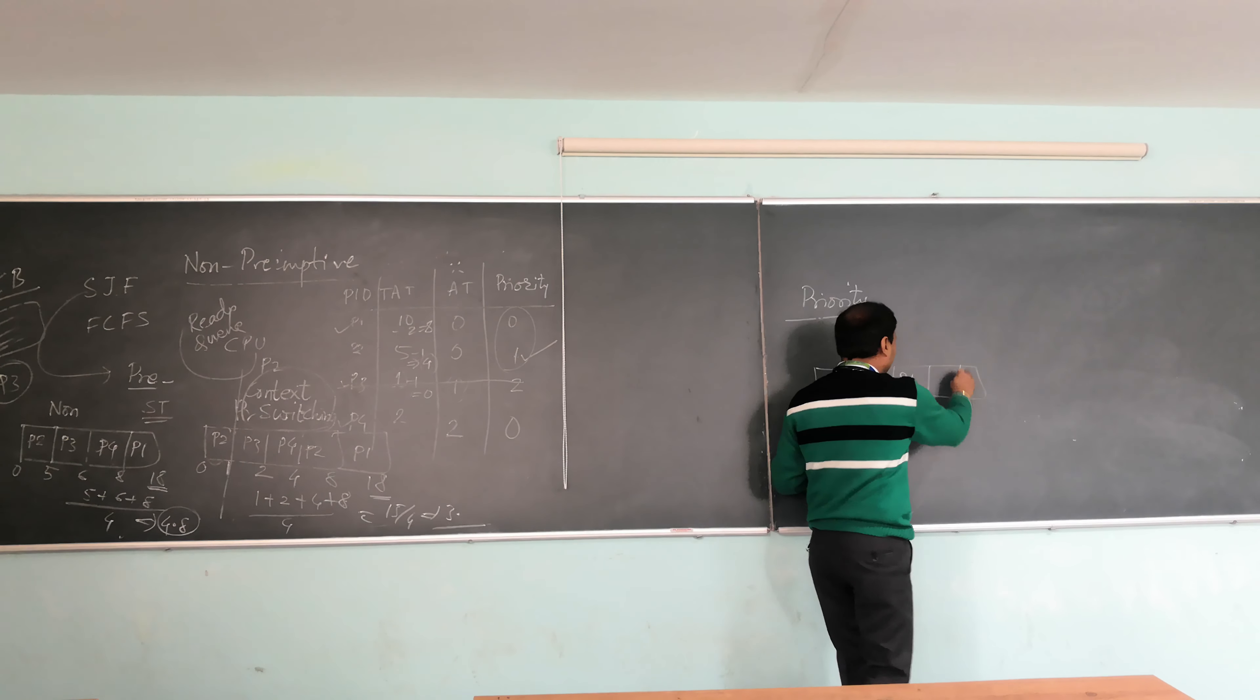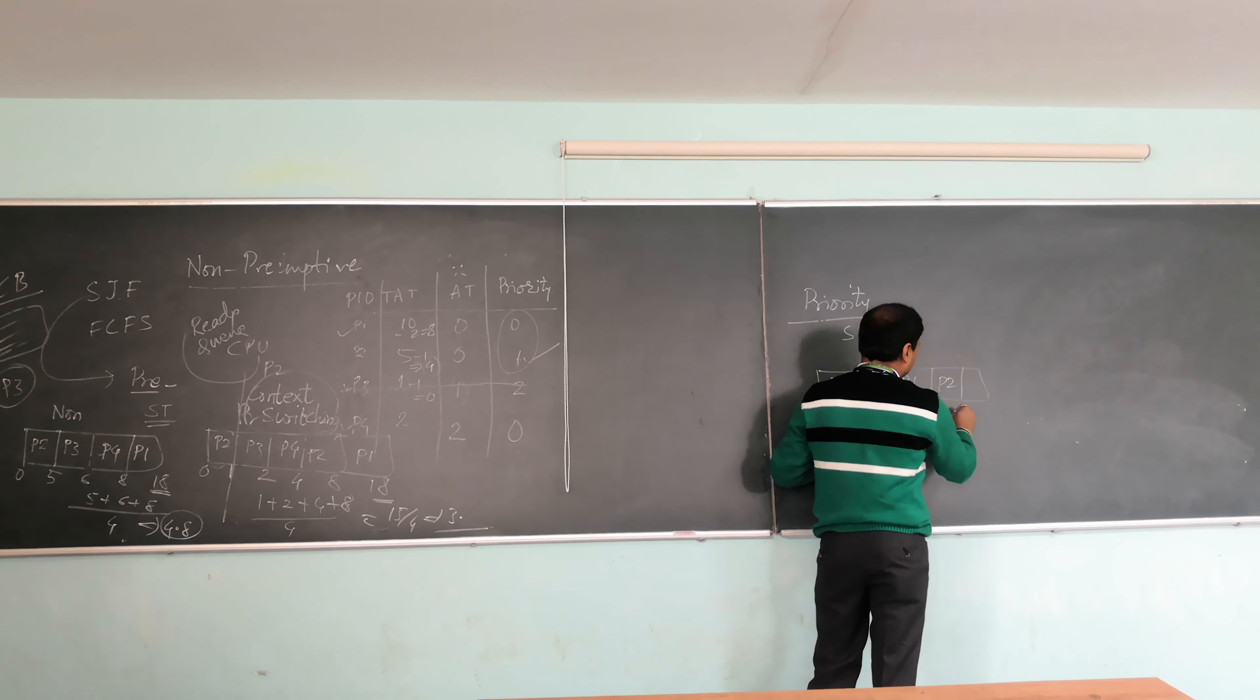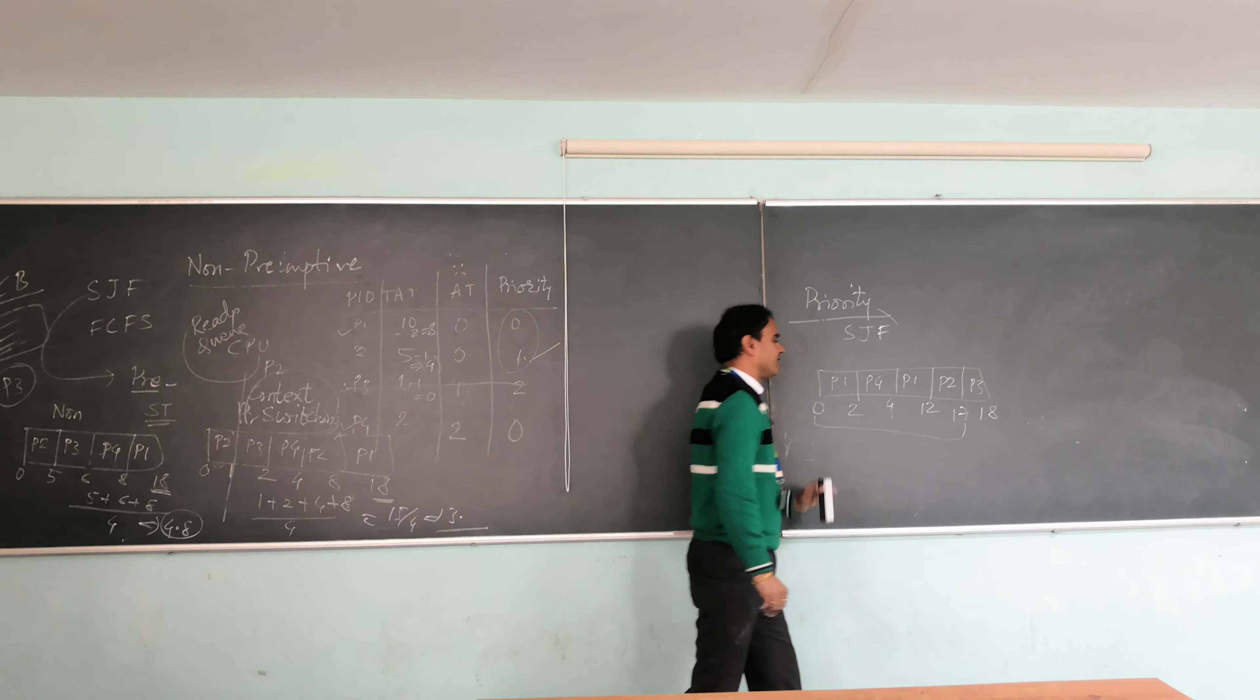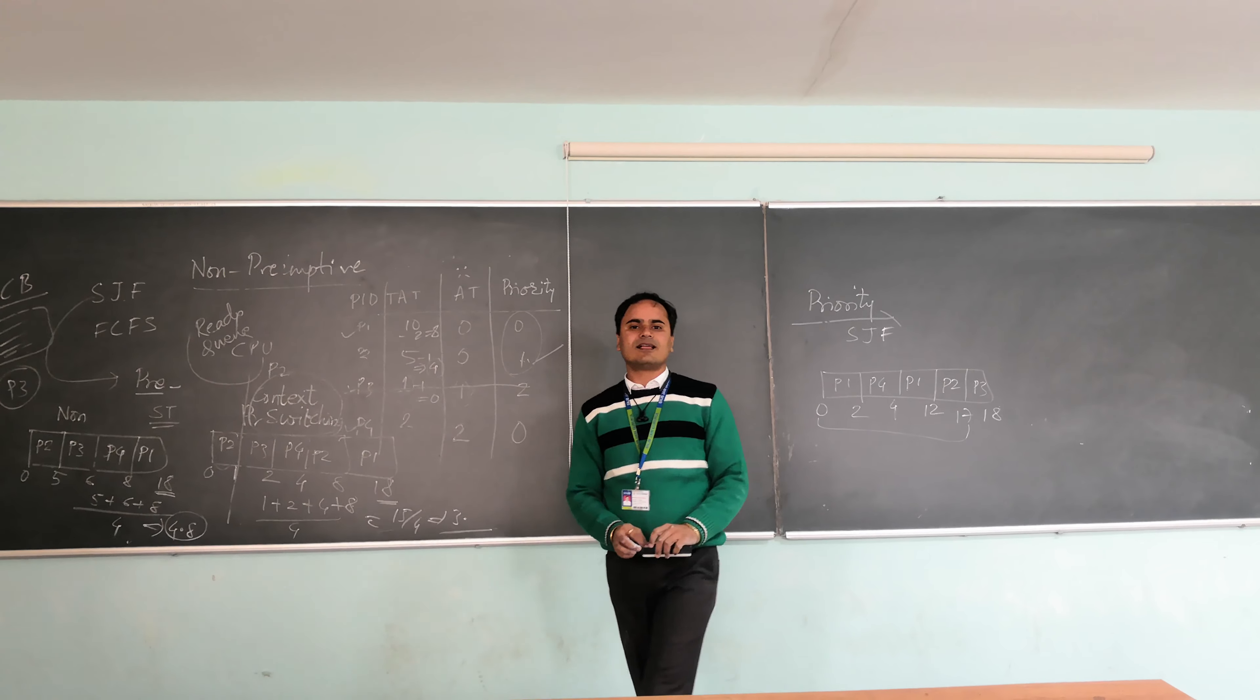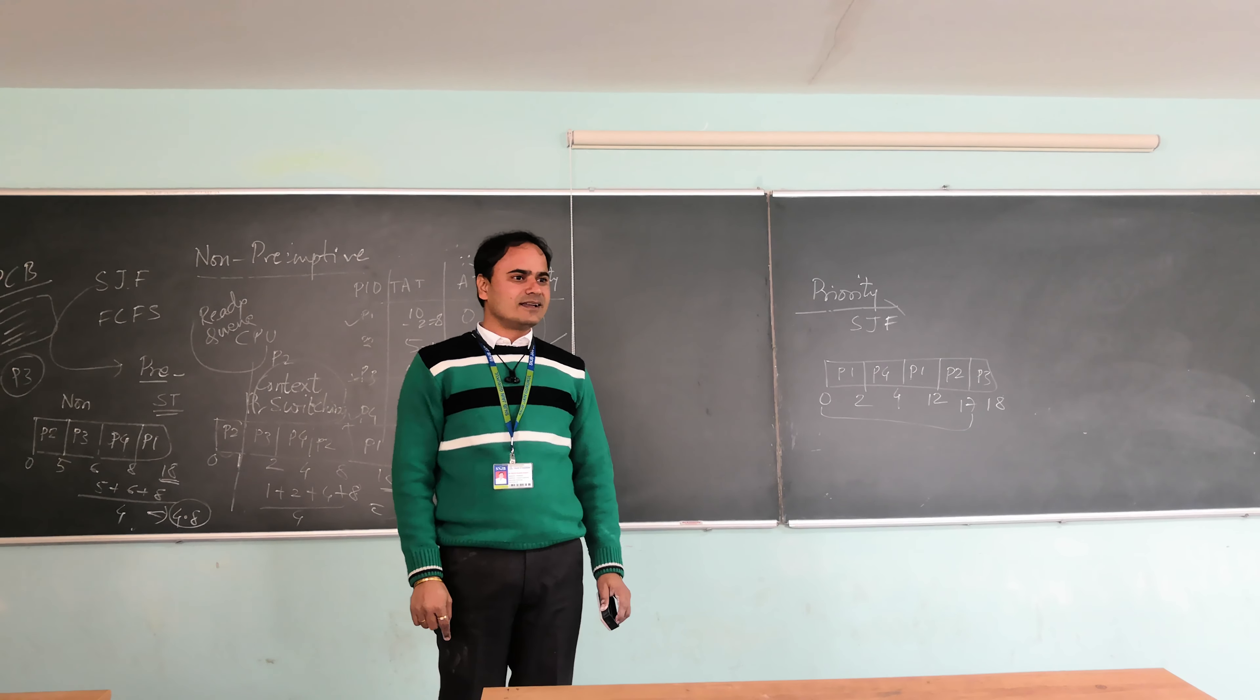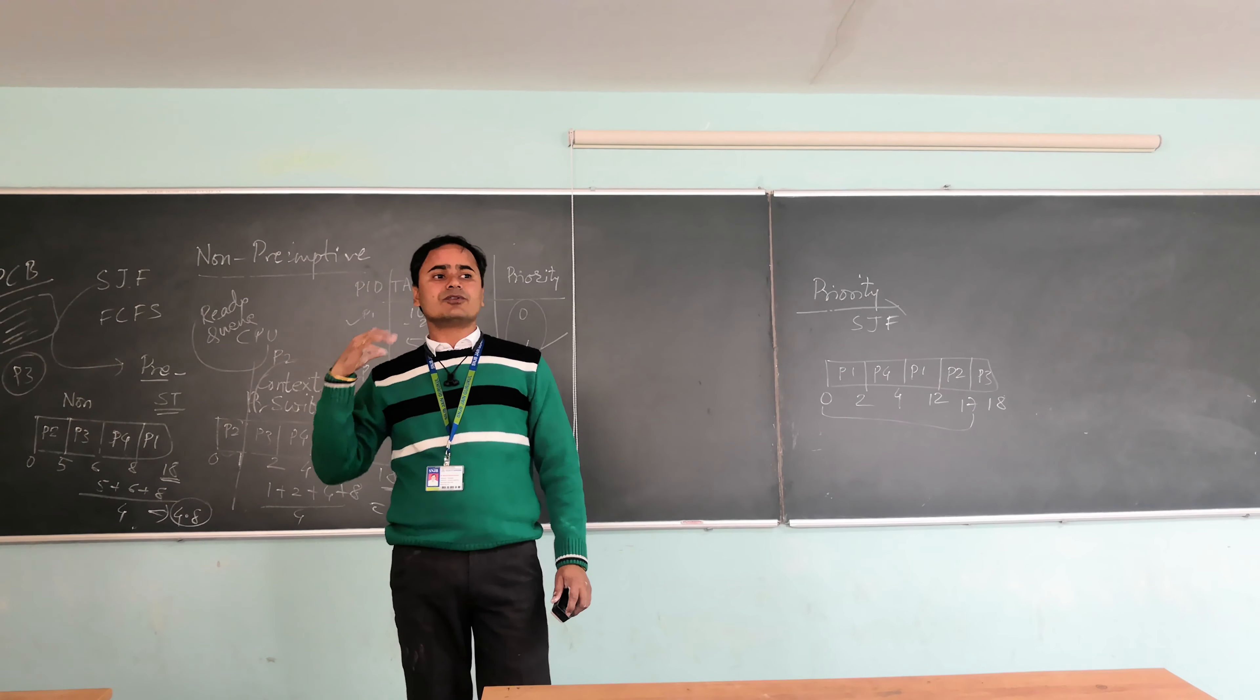Then there will be low priority job, so we will take P2 into account. So P2 will be executed till the 17th and then there will be P3. You got it? Again you need to take average. The moment you are taking average of it, you will understand that non-preemptive choice was better than preemptive. Now you got it? At here, here, preemptive is better than non-preemptive. Are you getting it now?